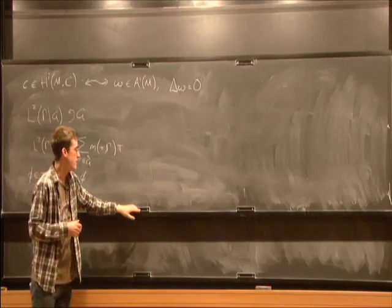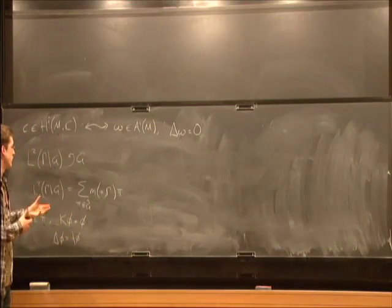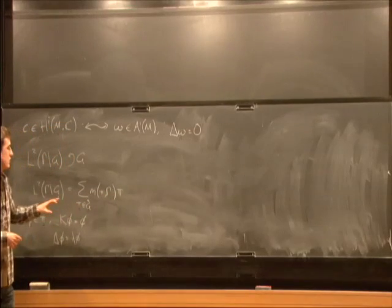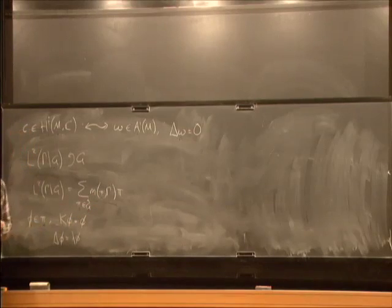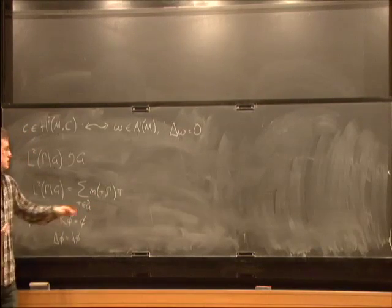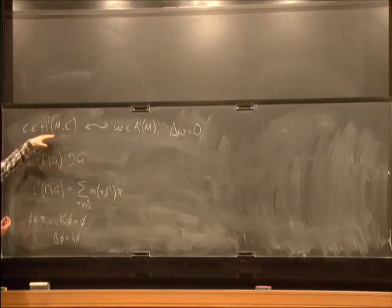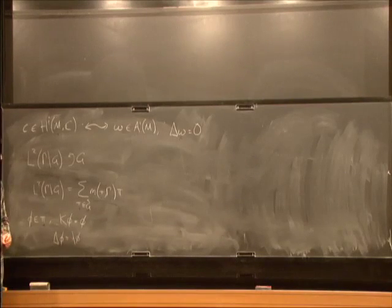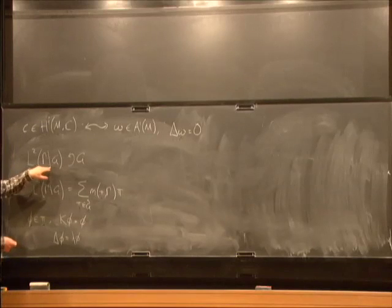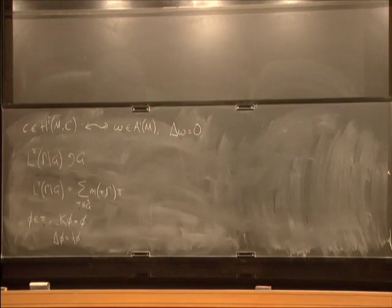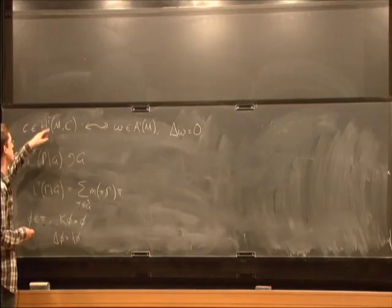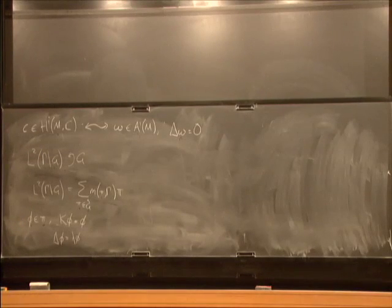What you can prove is that there are special classes of representations of G, which are called representations of cohomological type. Each of these representations contributes to the cohomology of M in certain degrees with certain multiplicities. For instance, the constant function lives in this L^2 space, and that generates an irreducible representation. That corresponds to the constant function on M, which represents the class in H^0. This is fancier generalizations of this.